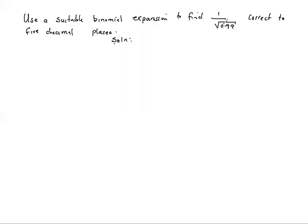Okay, so we are looking at the question: use a suitable binomial expansion to find one over the root of 0.99 correct to five decimal places. So we're looking for a suitable binomial expansion.